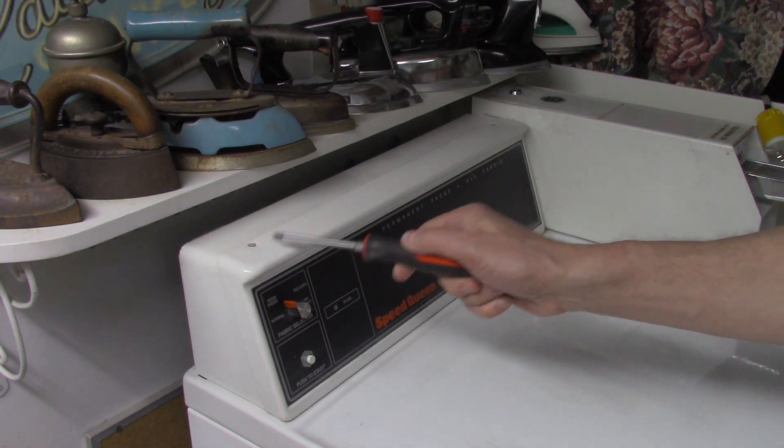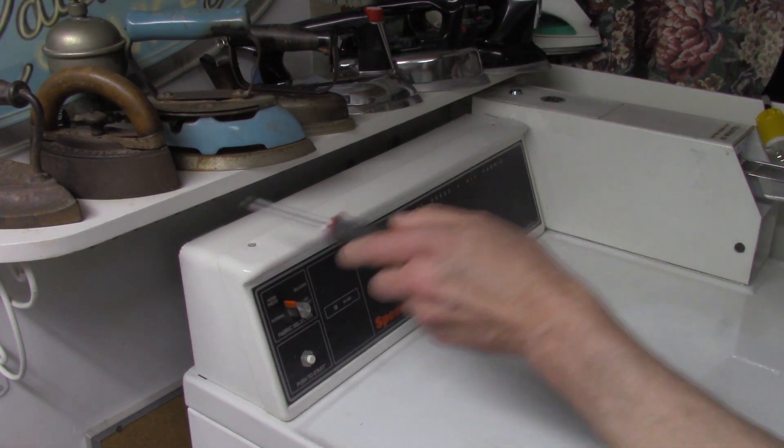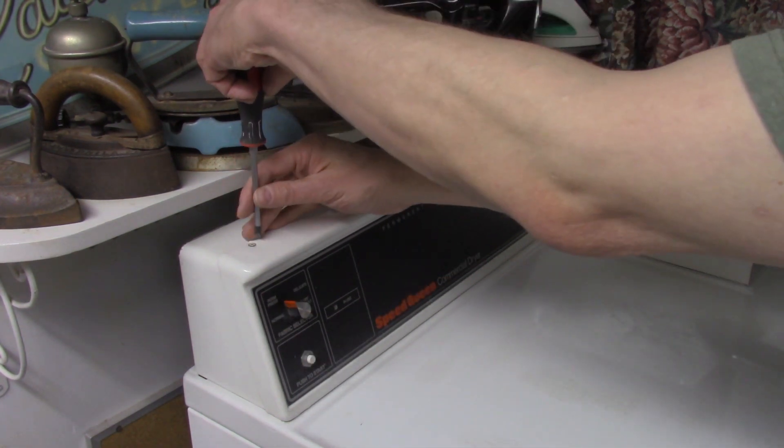A good thing about the Speed Queen dryer is that they're made for servicing when there's long rows of them, so all the parts are easy to get at. You can take these screws off.